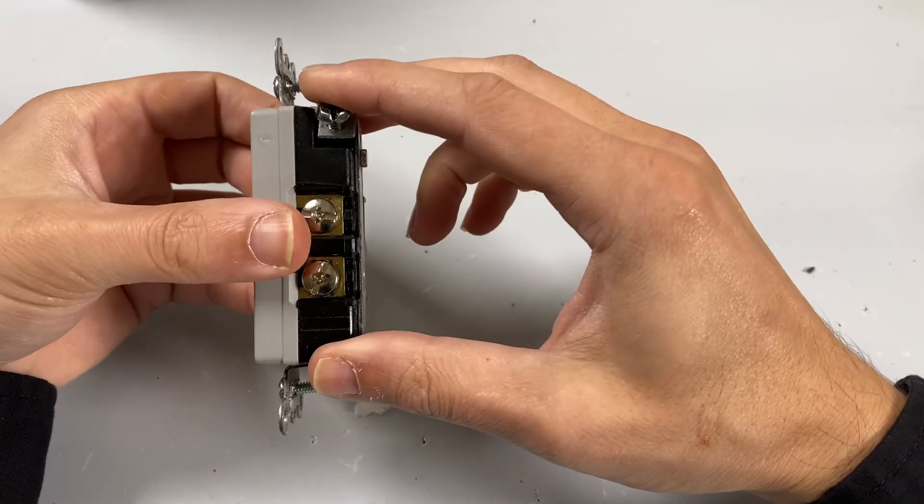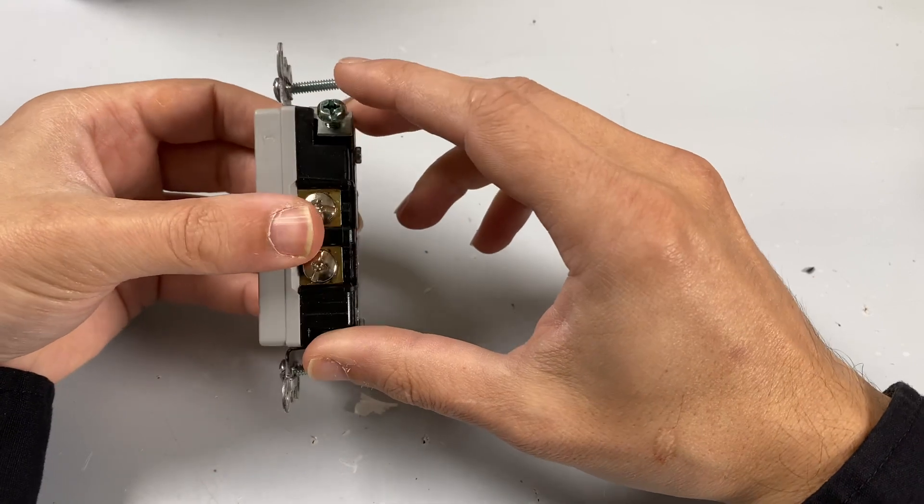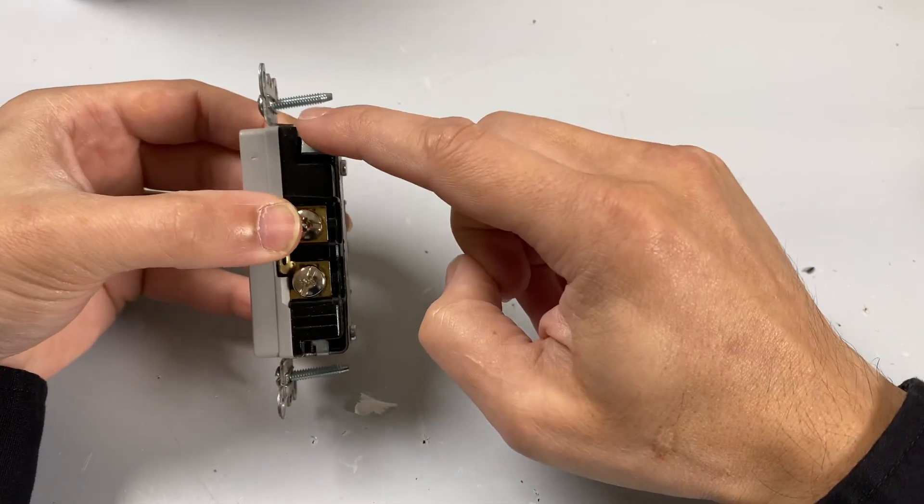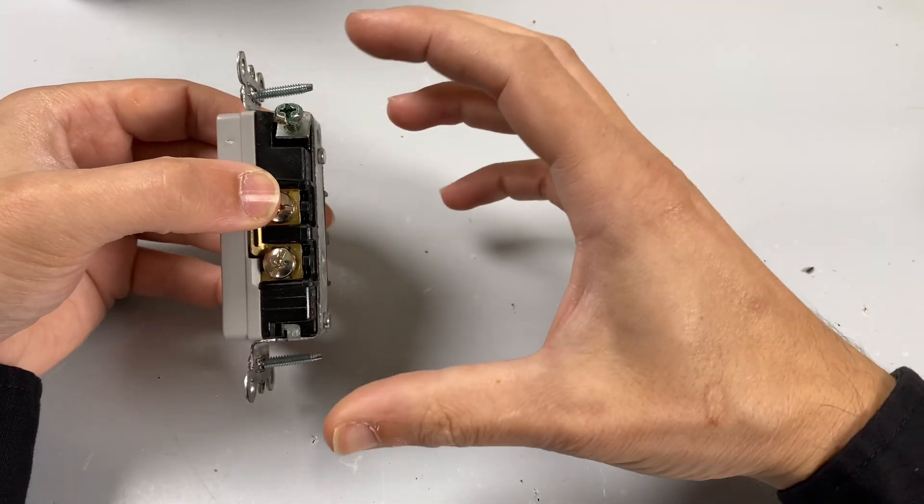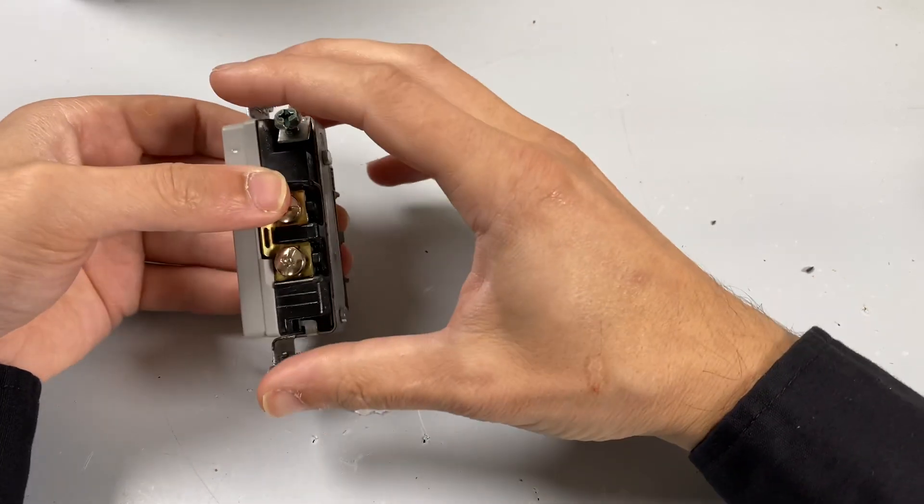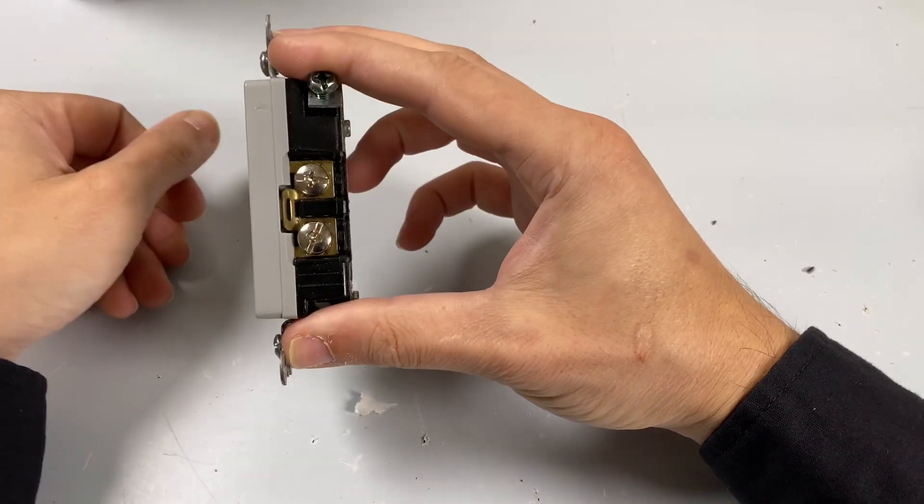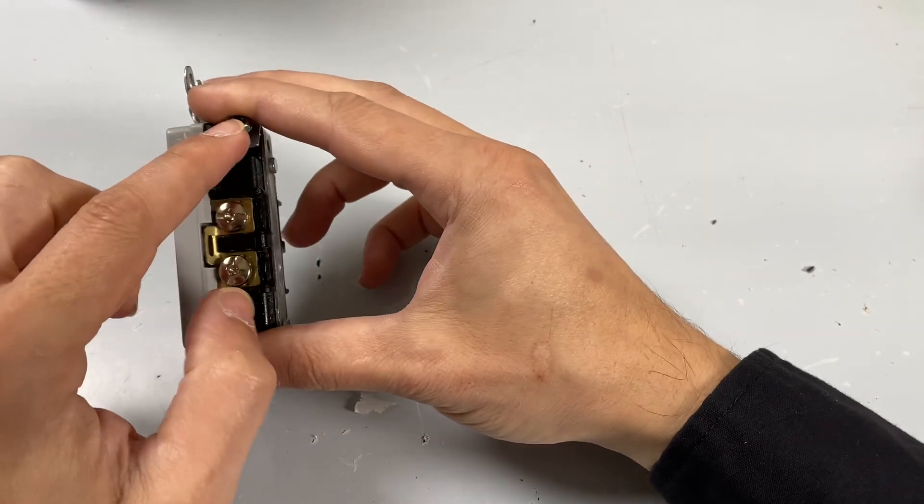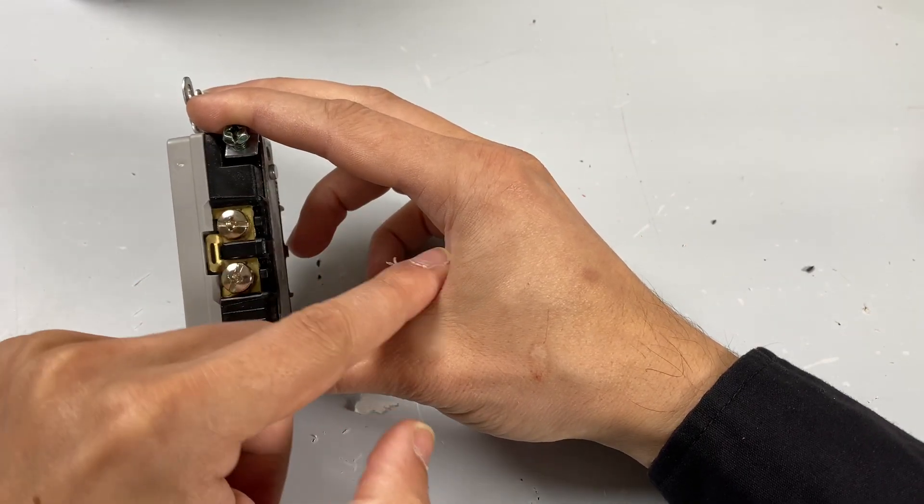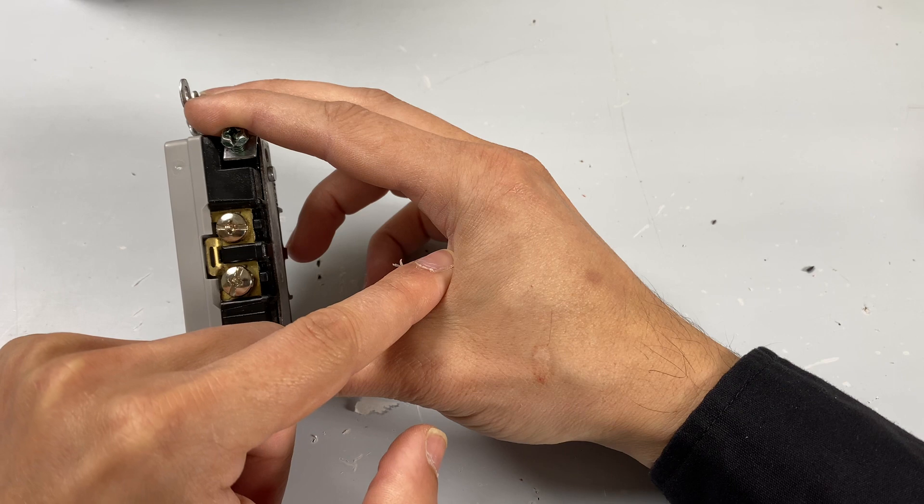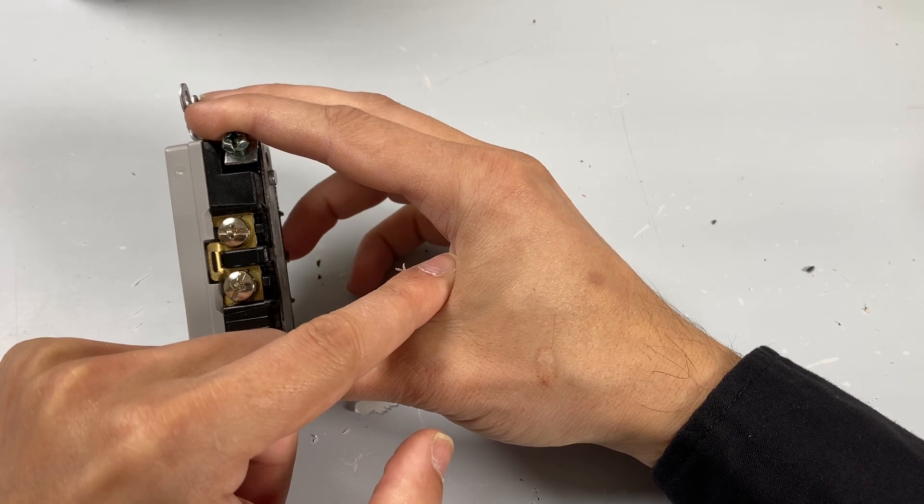When you're mounting this, commonly in an older building, you would take this ground screw and mount it to the back of the box. So if my hand is the box, the outlet's mounted into the box like this. This ground screw is mounted via wire and screwed into the back of the box to get your ground if you don't have ground run.